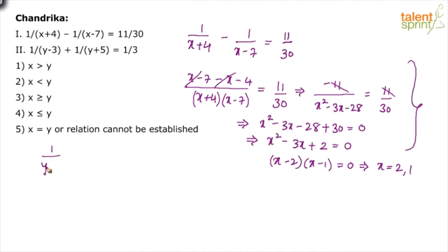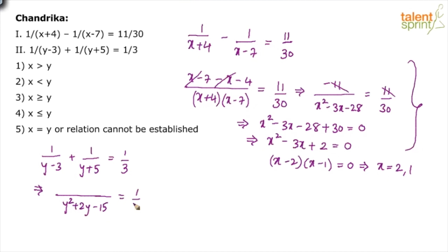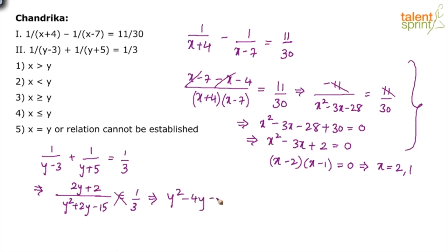Now the second equation: 1/(y-3) plus 1/(y+5) equals 1/3. Directly write the expanded denominator as y squared plus 2y minus 15. The numerator is (y+5) plus (y-3), which gives 2y plus 2. Cross-multiplying: 3 times (2y+2) gives 6y plus 6. So y squared plus 2y minus 6y minus 15 minus 6 equals 0, giving y squared minus 4y minus 21 equals 0.